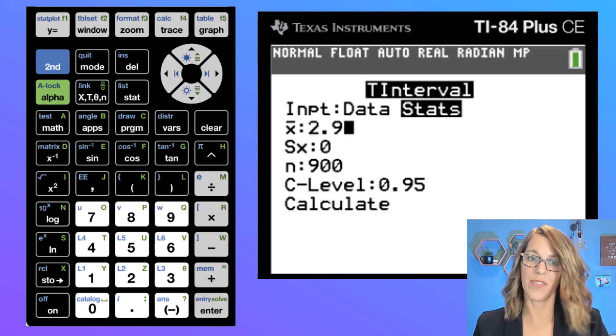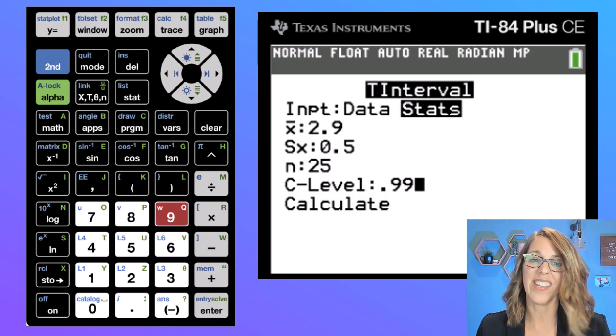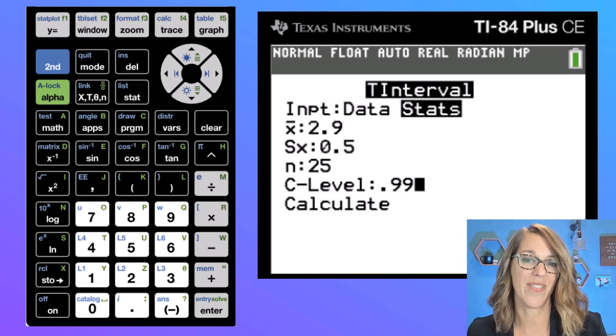This time we had a sample mean of 2.9 with a sample standard deviation of 0.5 and a survey size of 25. And we wanted the 99% confidence level.